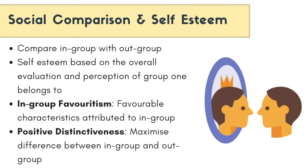One way this is done is by favoring our in-groups with positive attributes and increasing the difference with an out-group to achieve positive distinctiveness. This is also often achieved by out-group discrimination, which is attributing negative characteristics to the out-groups. This kind of comparison is usually not necessarily based on logic, but often based on biases such as confirmation bias, with the need to achieve higher or improved self-esteem.